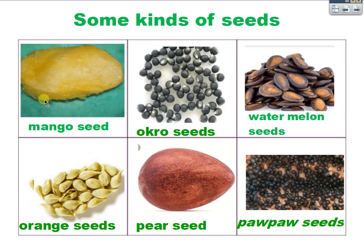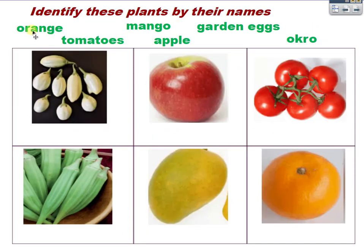Now, some kinds of seeds — let's look at these seeds. There are different characteristics about them. Look at the mango seed: it's bigger than the okra seeds. Mango has one seed, while okra has many seeds. You can see that watermelon, oranges, and pear also have one seed, while pepper also has many seeds.